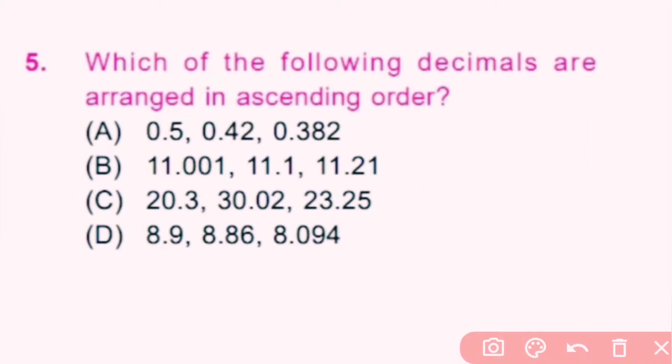Question number 5: Which of the following decimals are arranged in ascending order? Ascending order means small to big number. Looking at the given options, only option B is arranged in ascending order — the smallest number is followed by progressively bigger numbers. B is the correct answer.